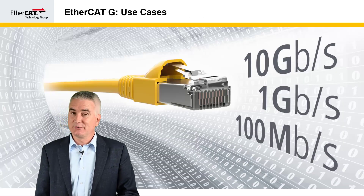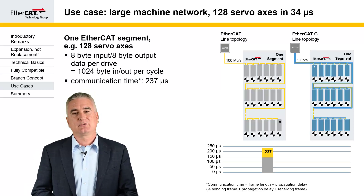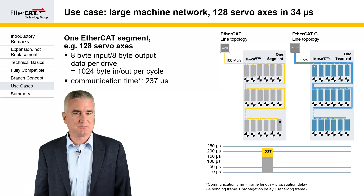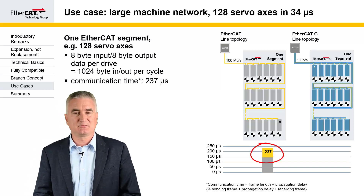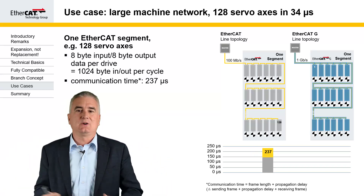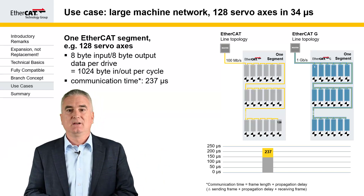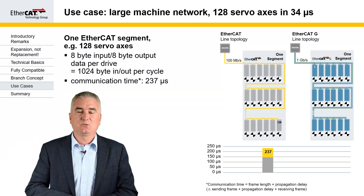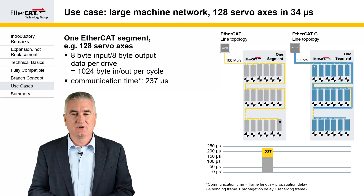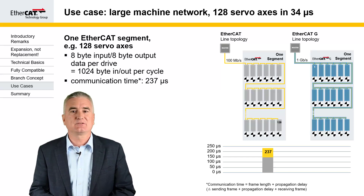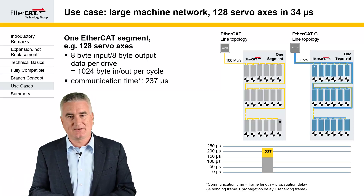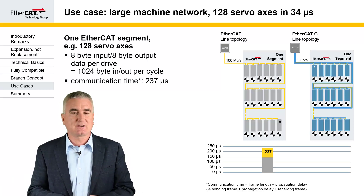Let's have a look at some use cases. Starting with a large machine network with 128 servo axes: if we run this with conventional 100 megabit EtherCAT in a line topology, we end up with about 237 microseconds communication time. Communication time is the time for the frame to make it through all the devices and come back to the master — this is not necessarily the cycle time. With EtherCAT, we don't have to wait for the frame to return to the master before sending the next one; we can send frames back to back. So the cycle time can even be shorter than 237 microseconds. But in the worst case scenario, where we wait for the entire frame to return, we end up with 237 microseconds in 100 megabit configuration.